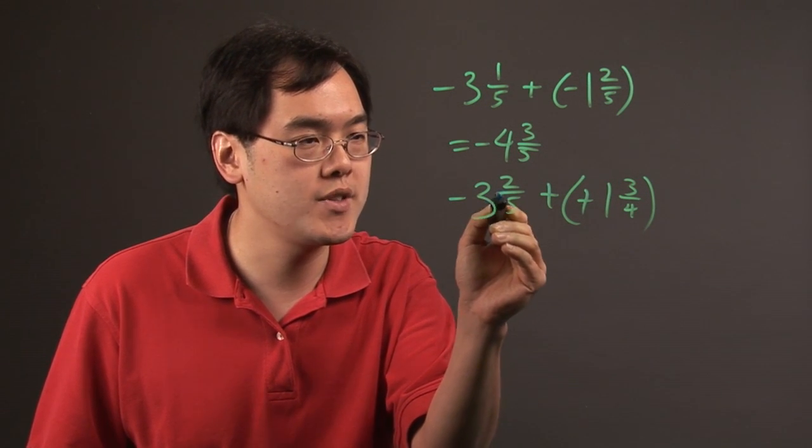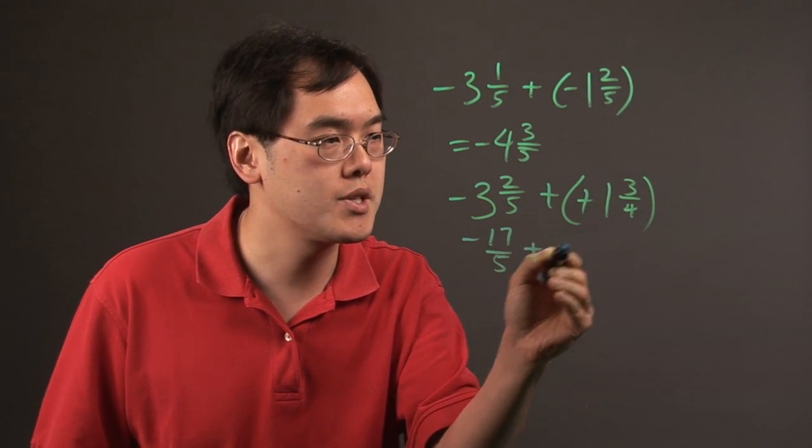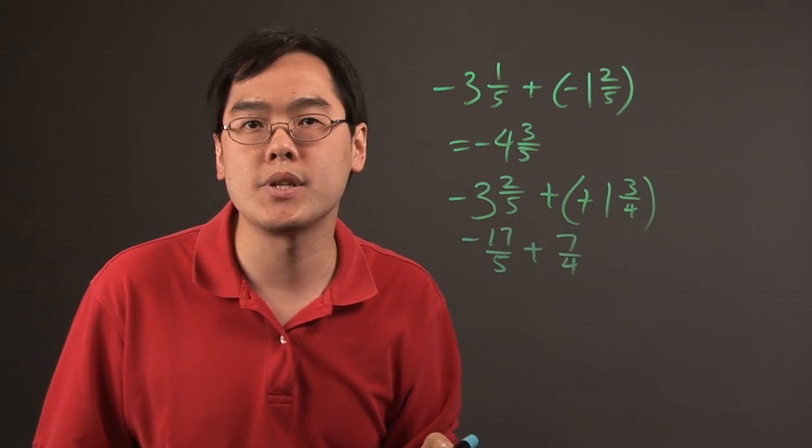So this will be five times three is 15 plus two is negative 17 over five plus four times one is four plus three is seven. So negative 17-fifths plus seven-fourths.